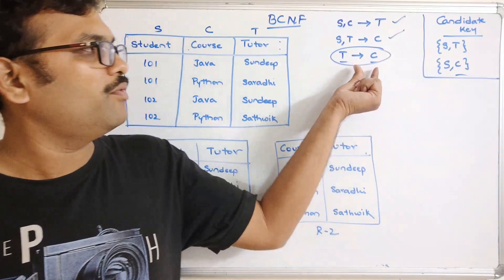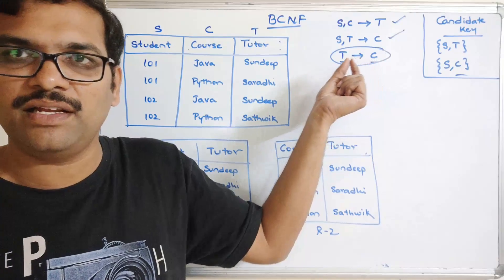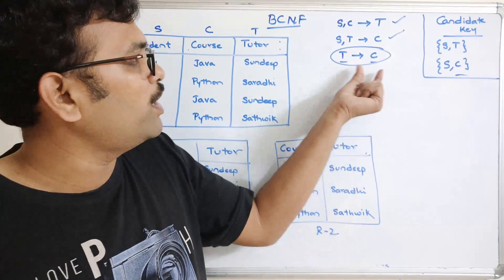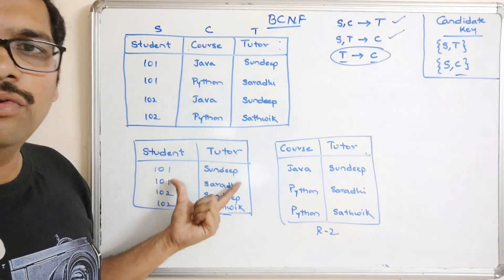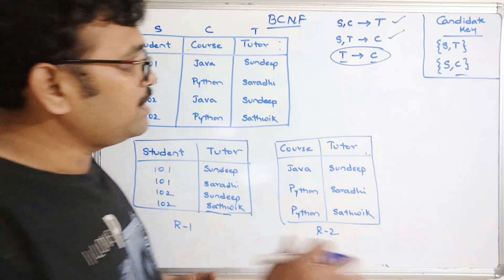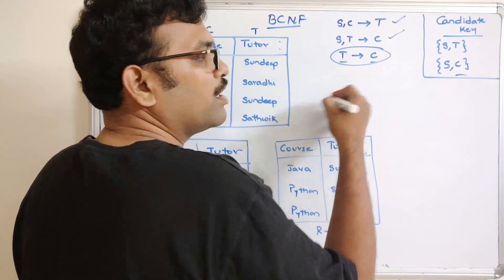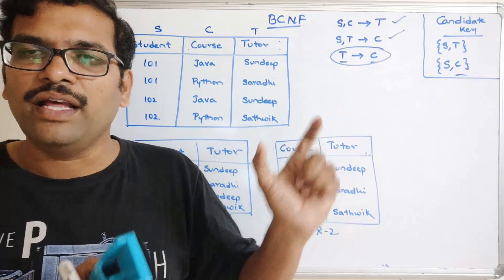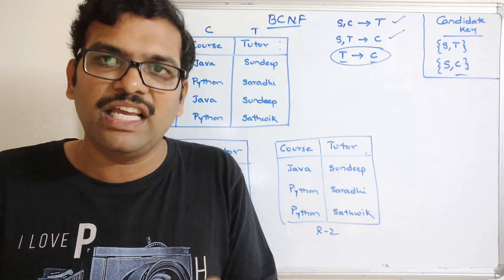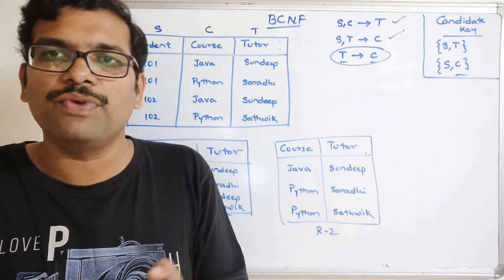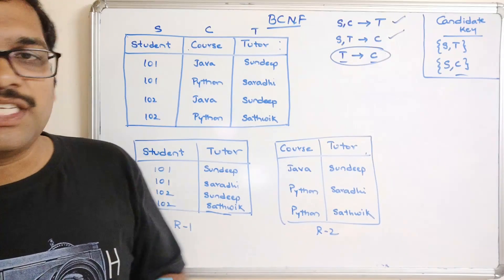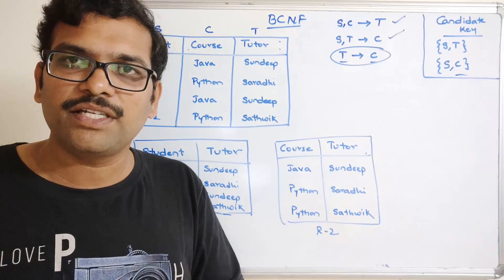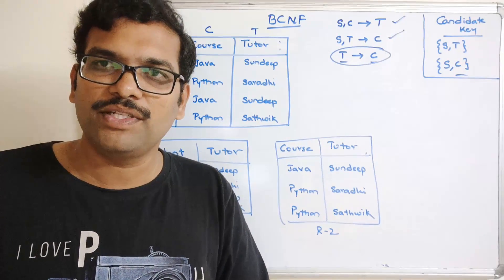We found one functional dependency — T→C — which did not satisfy the BCNF condition, so we decomposed the relation into sub-relations. BCNF is stronger than 3NF. If a relation satisfies BCNF, the database schema is considered a very good design. If you have any doubts, post them in the comment section. Please like, share, and subscribe to our channel. Thanks for watching!